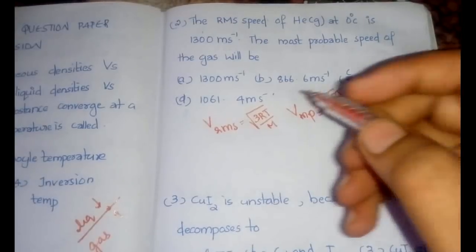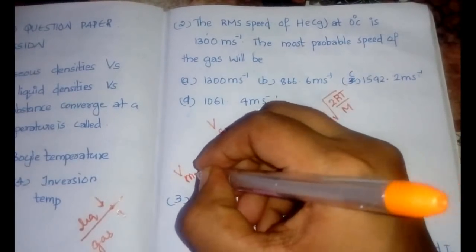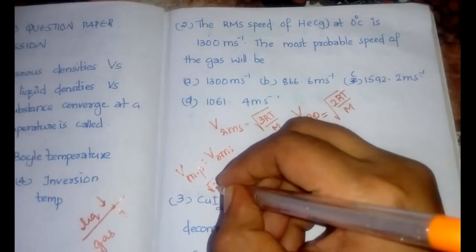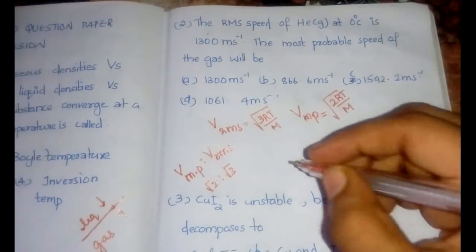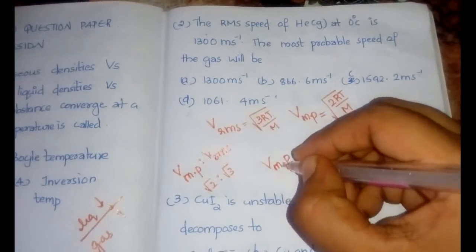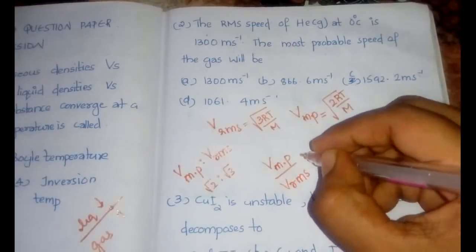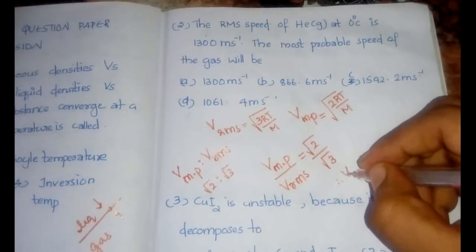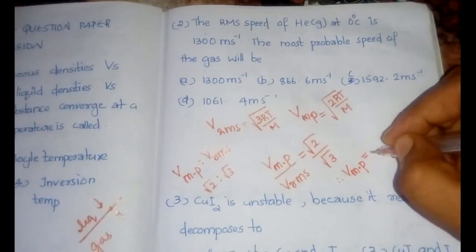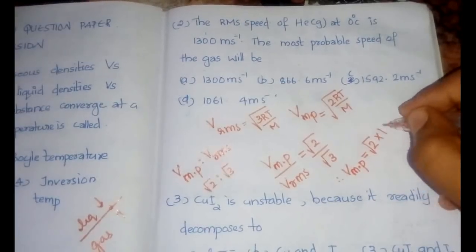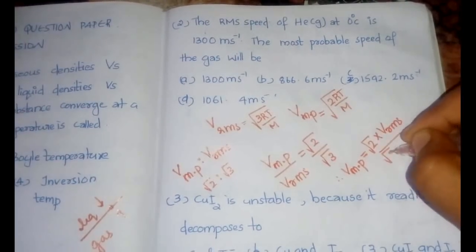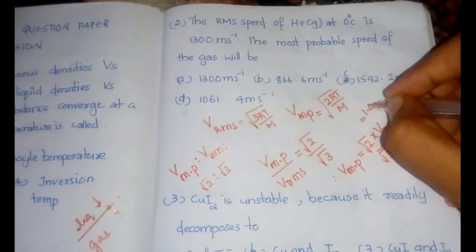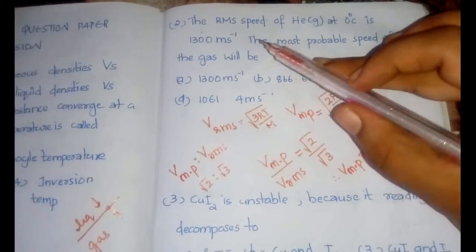The ratio is: v_most probable : v_rms = √2 : √3. So v_most probable / v_rms = √2 / √3. Therefore, v_most probable = (√2 × v_rms) / √3.